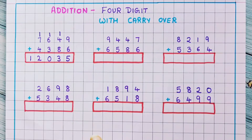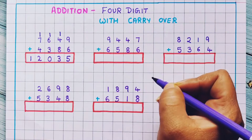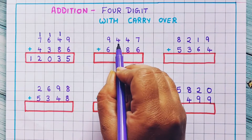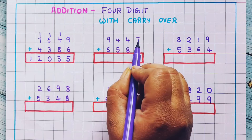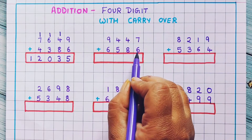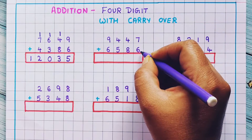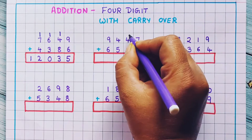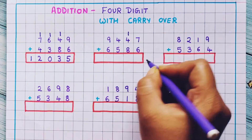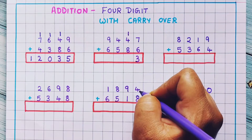I hope that is clear to you. Now let's move towards the next problem. 9447 plus 6586. Now 7 plus 6 is 13, so 1 I will write over here as carryover and 3 I will write at the bottom.